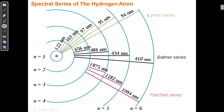This is called the Lyman series. The Lyman series all end on n equals 1 — when electrons go down from any level down to level n equals 1, the lowest orbital. When electrons go from 6, 5, 4, or 3 down to n equals 2, the second electron shell, we call that the Balmer series. When electrons go from 6, 5, or 4 and fall down to 3, we call that the Paschen series.